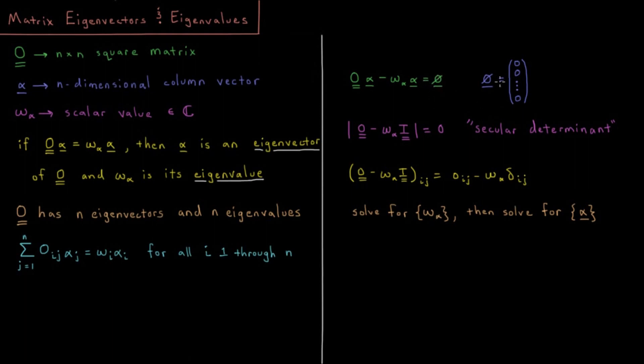A zero vector is just a column vector where all of the elements are zero. In general, if we want to solve for eigenvectors or eigenvalues, what we end up getting is this type of equation, which is called a secular determinant.